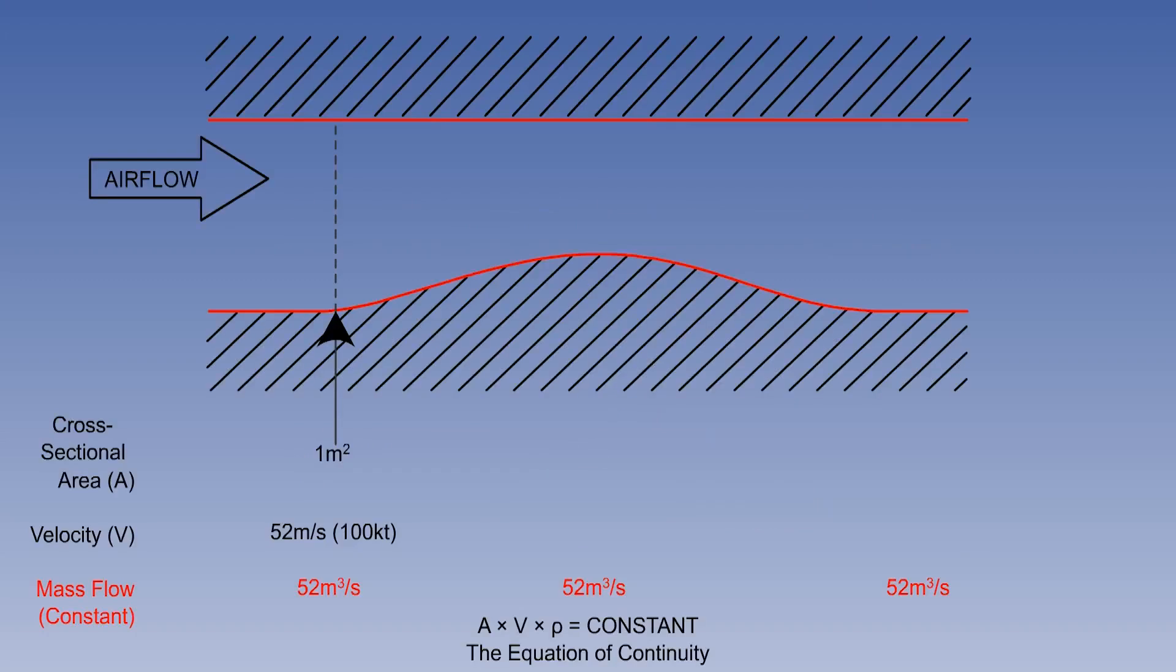Because the mass flow must remain constant, it can be seen from the equation of continuity that the reduction in the tube's cross-sectional area results in an increase in velocity, and vice versa.